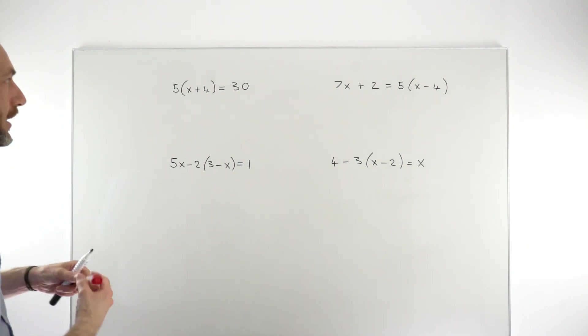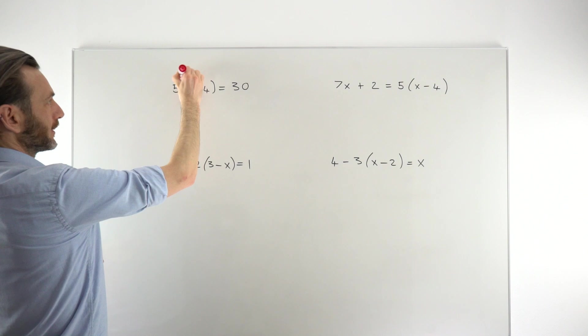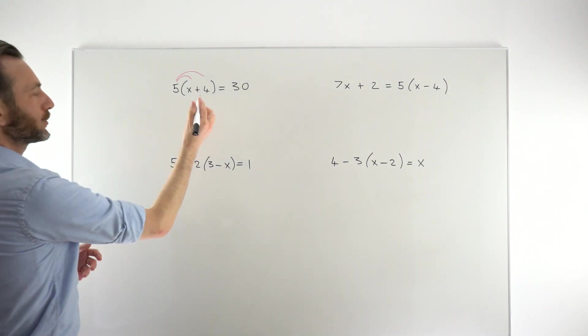But basically, when you expand out a bracket, you just multiply whatever's in front of the bracket to everything inside. So the 5 would multiply to the x and it also multiplies to the 4 separately. So let's just start by doing that.